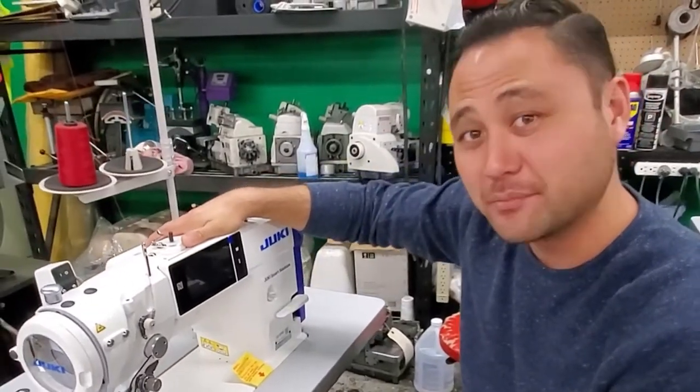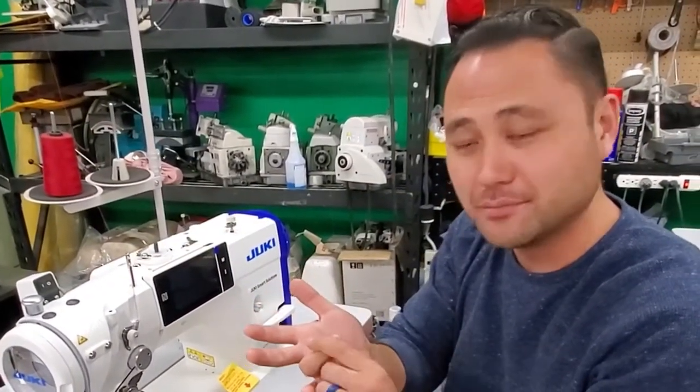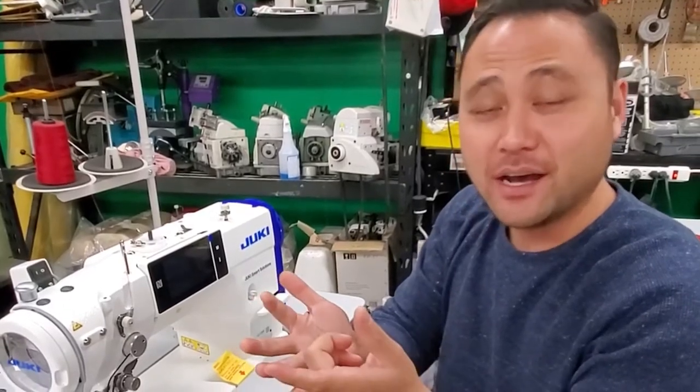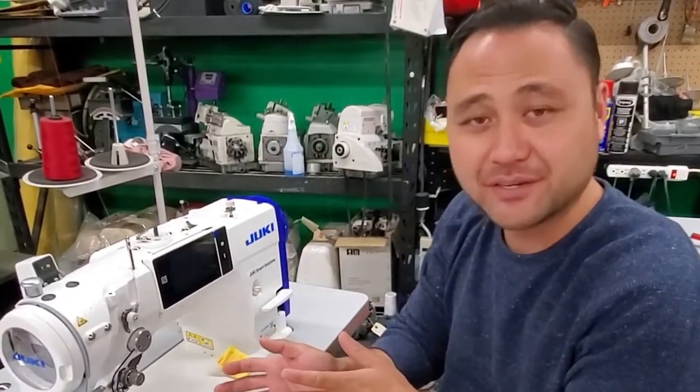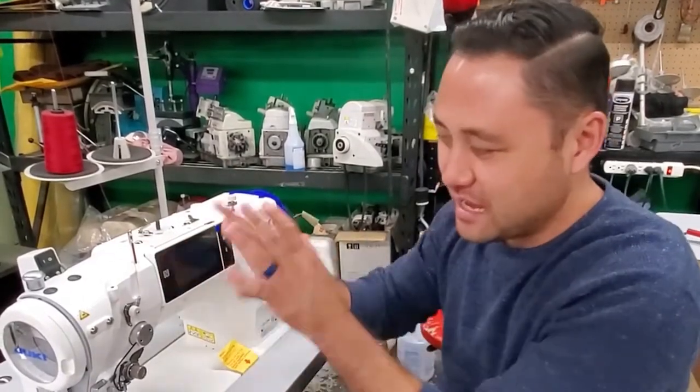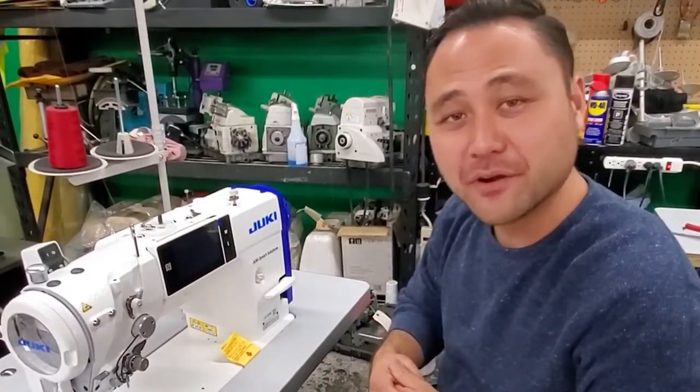This is their top of the line zigzag unit. It's a pattern zigzag unit. So you can do your standard single step zigzag, double step, three step, cycle sewing, scallop stitches. You can program your own specialty type of stitch in here as well. So pretty much a lot of information to cover on this machine.